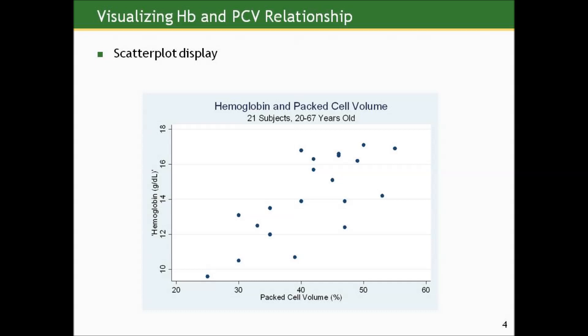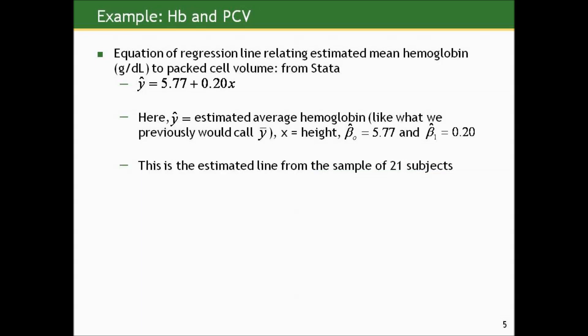Here's a scatterplot of hemoglobin versus packed cell volume for these 21 subjects. There does seem to be some sort of trend — as the X, that is, packed cell volume increases, there's a trend of increasing hemoglobin, and we might be able to capture that shift of the mean with a line. If you fit a regression line to this data, the equation relating estimated mean hemoglobin levels to packed cell volume is: estimated mean hemoglobin level Y-hat equals 5.77 — that's the intercept — plus 0.20 times X.